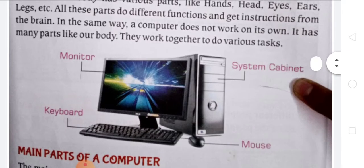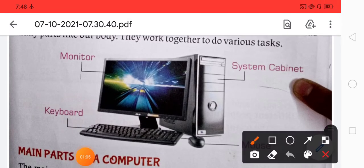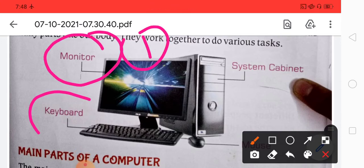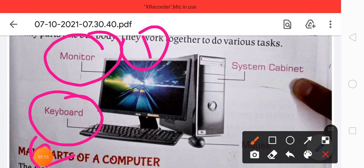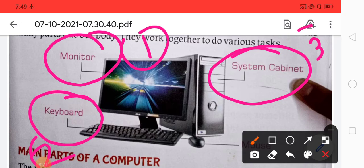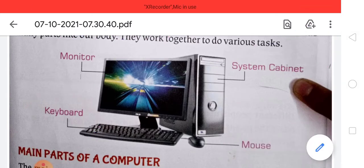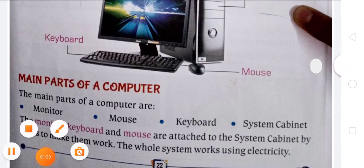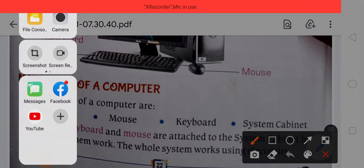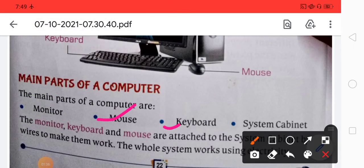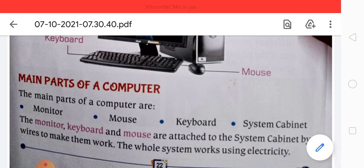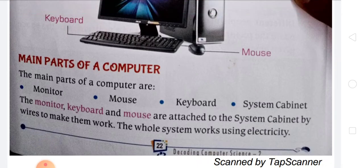This is a picture of a computer. The first part is the monitor, the second part is the keyboard, the third part is the system cabinet, and the fourth part is the mouse. These are the main four parts of a computer. The monitor, keyboard, and mouse are attached to the system cabinet by wires to make them work.